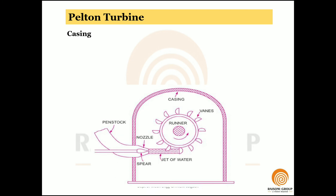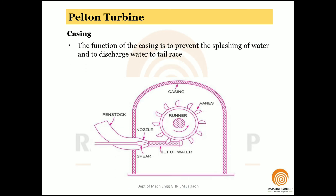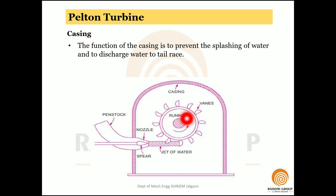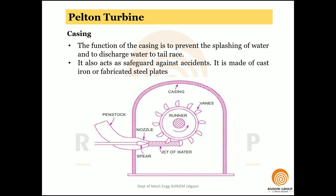The third part is the casing. The function of the casing is to prevent the splashing of water and to discharge water to the tailrace. The entire assembly — penstock, spear arrangement, nozzle, jet, and turbine — is enclosed in a casing. Since water strikes the buckets at very high velocity there is significant splashing, and the casing prevents this. It also acts as a safeguard against accidents involving the high-velocity moving parts. The casing is generally made of cast iron or fabricated steel plates.